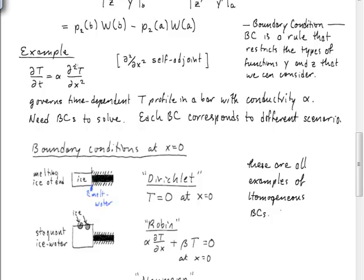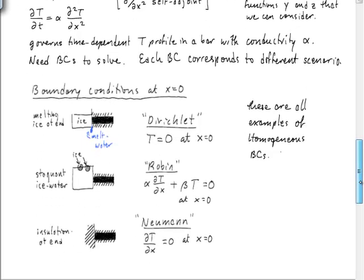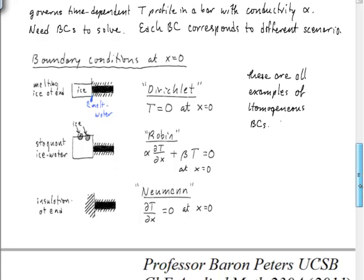And we can go through and we can look at a typical example and just think about the kinds of boundary conditions that we would apply and what kinds of things we call homogeneous boundary conditions. So this is our heat equation. It governs the temperature, time-dependent temperature profile in a bar with some given conductivity.